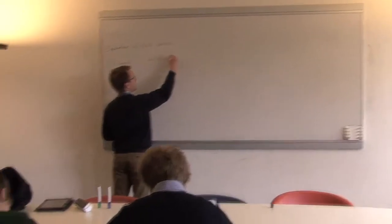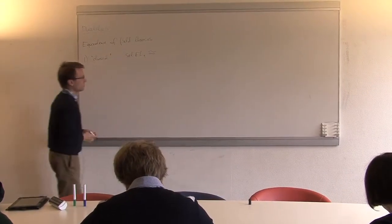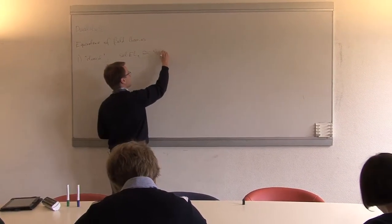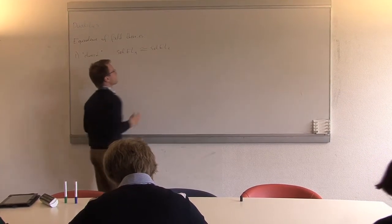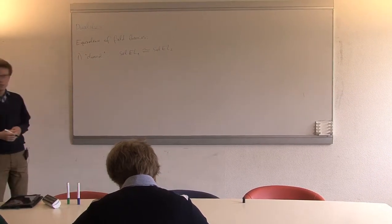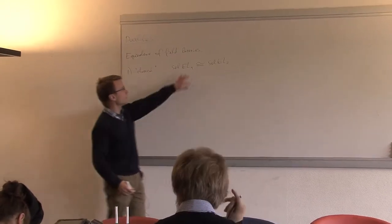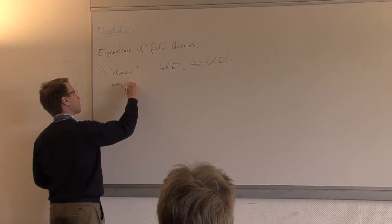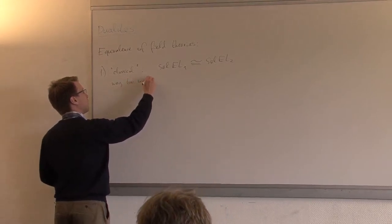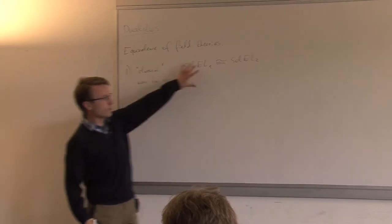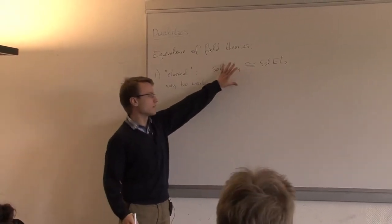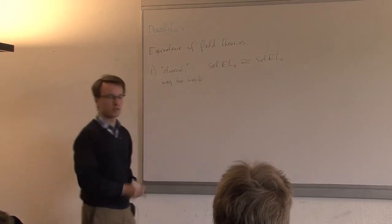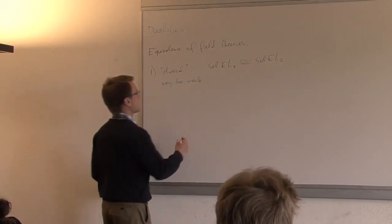If you have two field theories and you look at spaces of classical solutions in the first field theory, and it's isomorphic to the space of classical solutions in the second field theory — that's a reasonable definition, but it's way too weak. You can have theories which definitely don't look the same and aren't equivalent in any sense, even though the spaces of classical solutions are equivalent. So this is not a good answer.